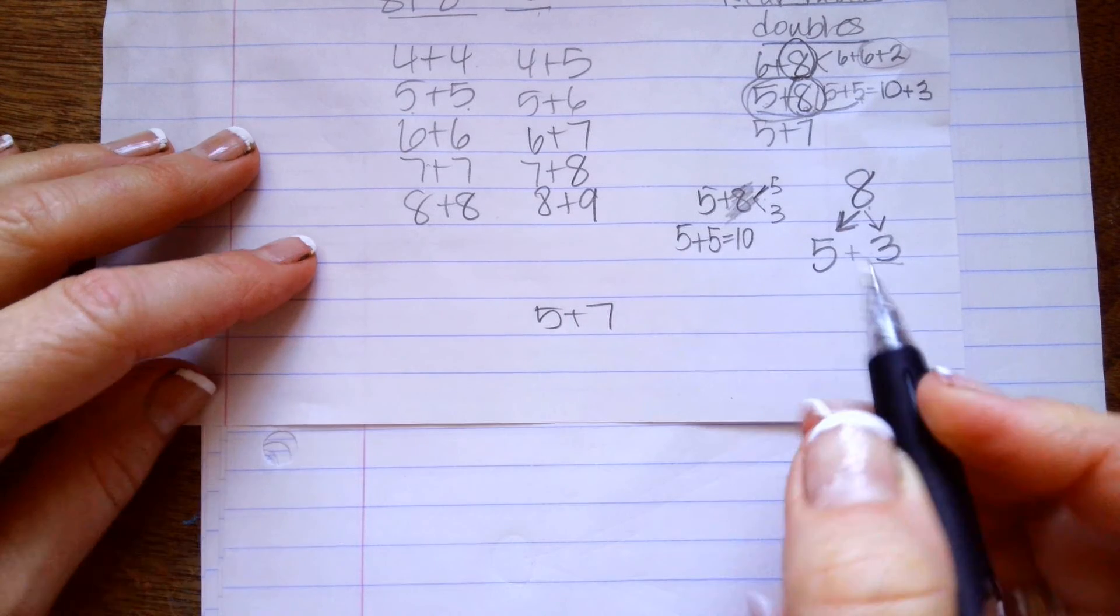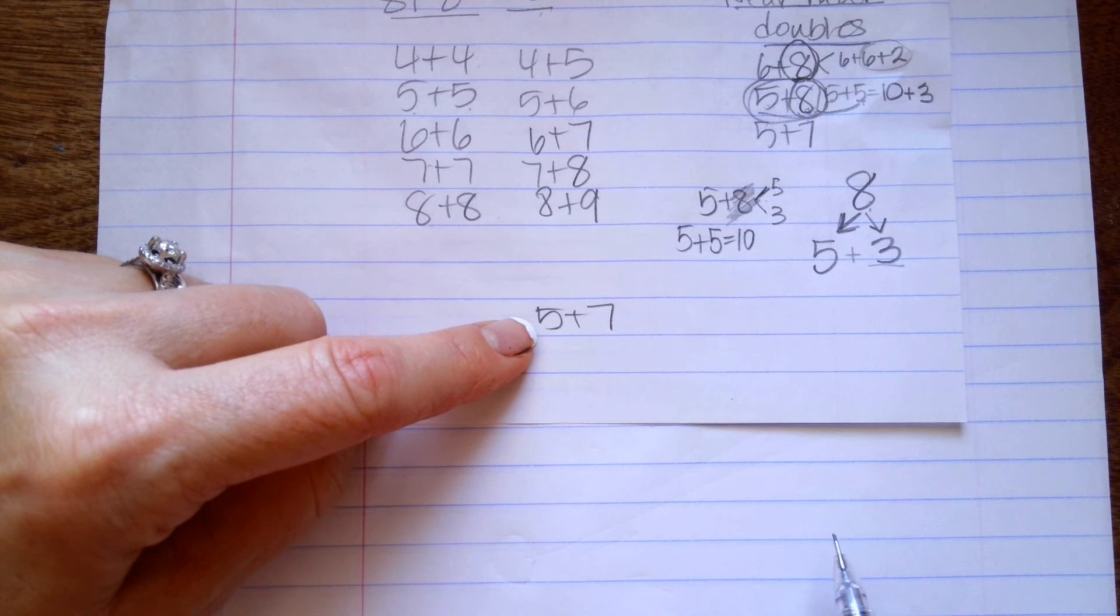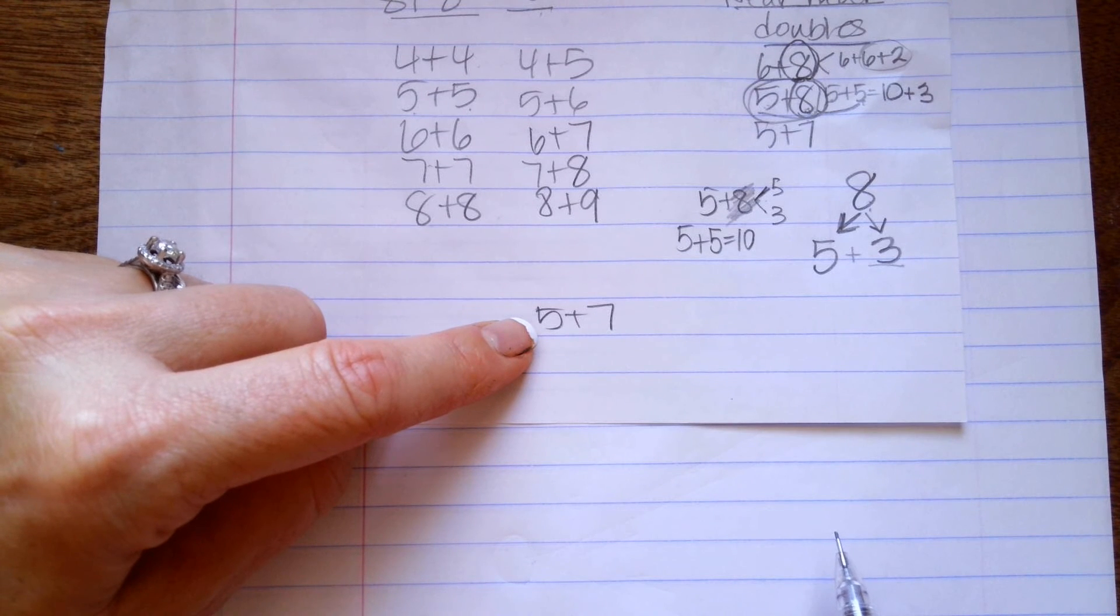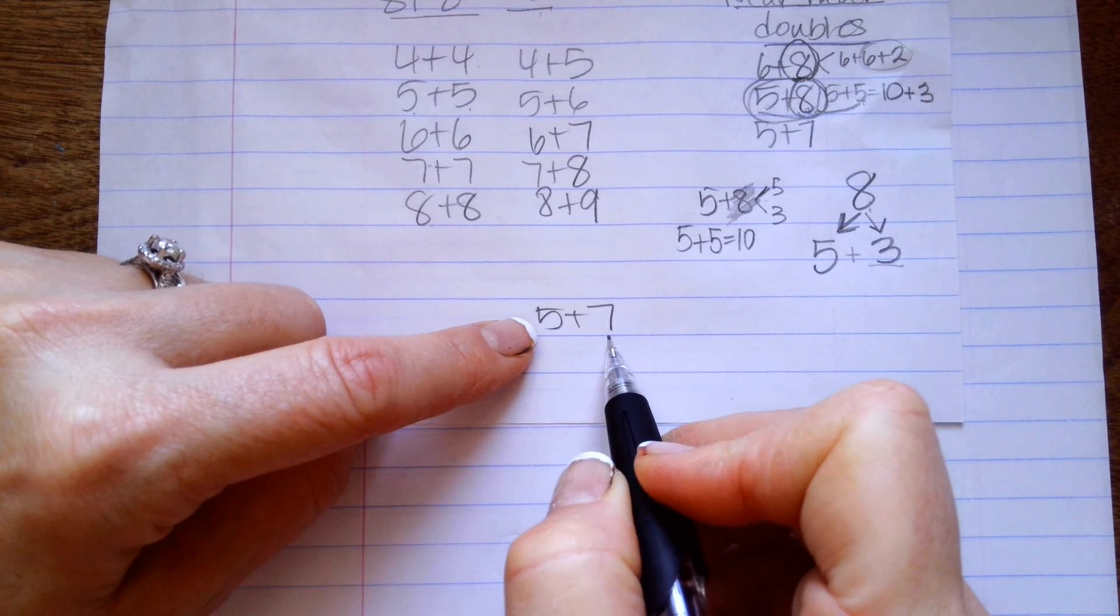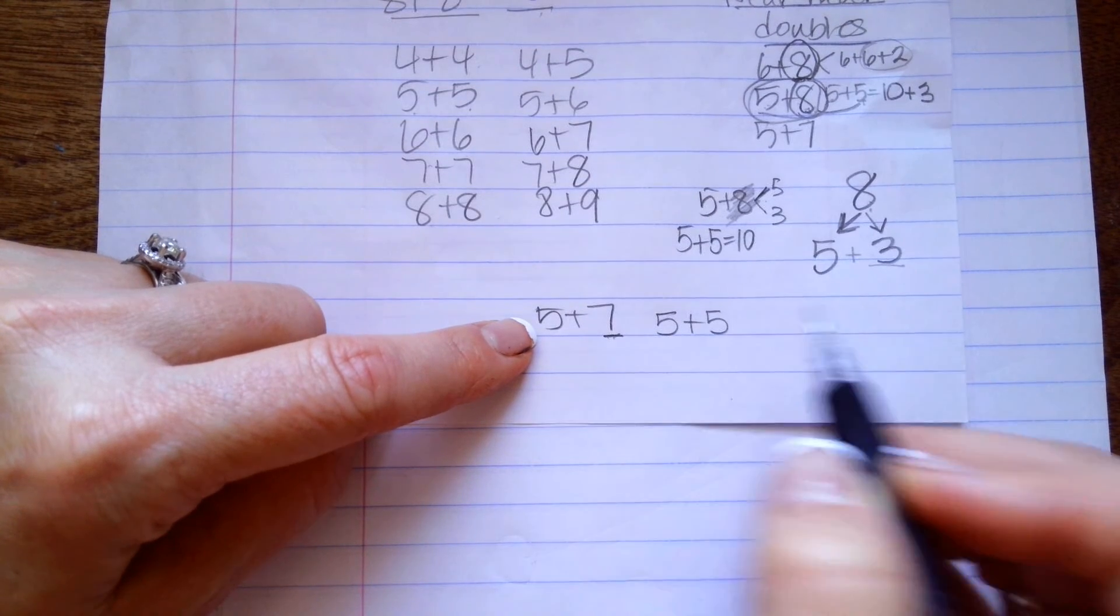Okay, so let's try it again. 5 plus 7 is my number. And here we have, I don't really want to keep this into a 5 plus 7.